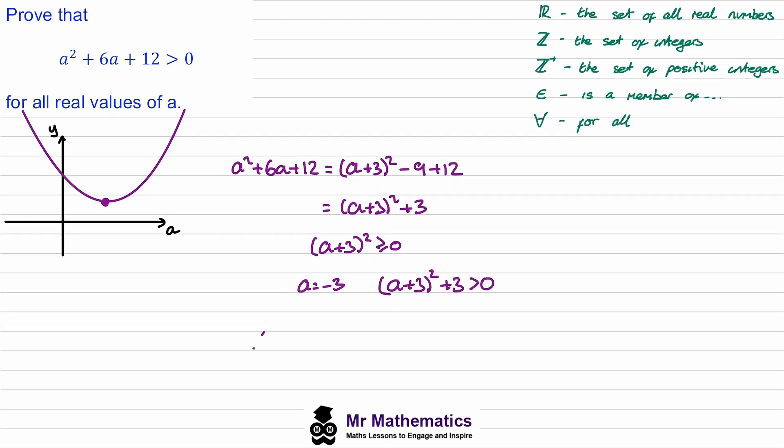So we say that therefore a² + 6a + 12 must be greater than 0 for all a values that are members of the set of real numbers.